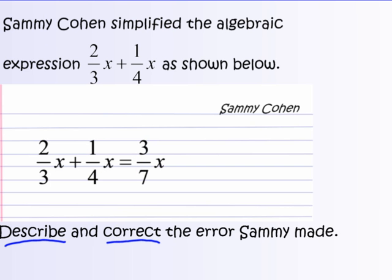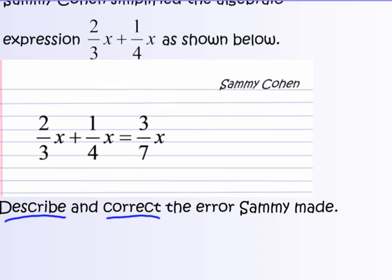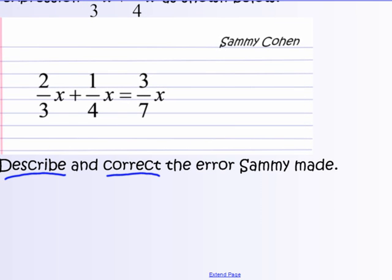And last thing for today: Sammy Cohen simplified this algebraic expression two-thirds x plus one-fourth x as shown below—two-thirds x plus one-fourth x equals three-sevenths x. Well, Sammy made a mistake there. So what I would like you to do is copy this example into your spiral notebook just as it is here, exactly as it is, and then describe and correct the error that Sammy made. First thing tomorrow we're going to go over that one first, so copy that into your spirals and correct it, please.